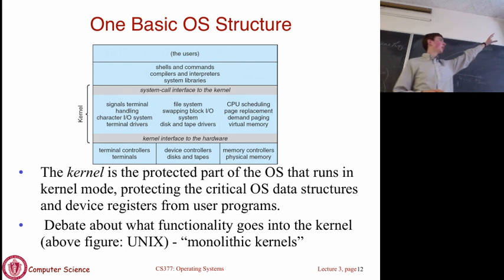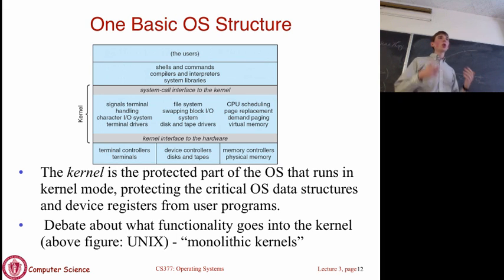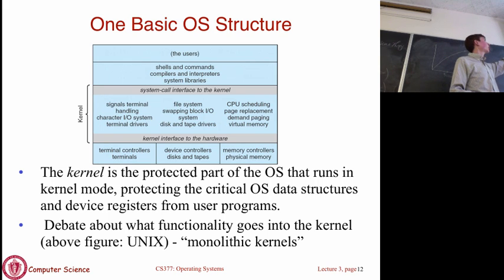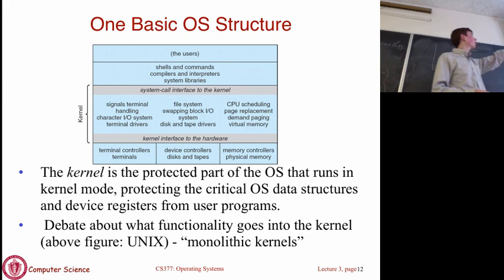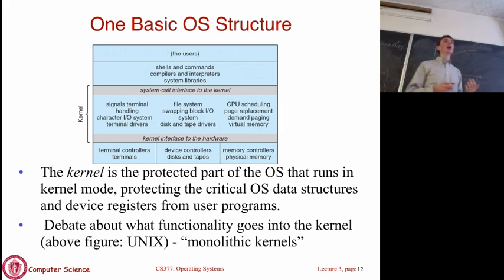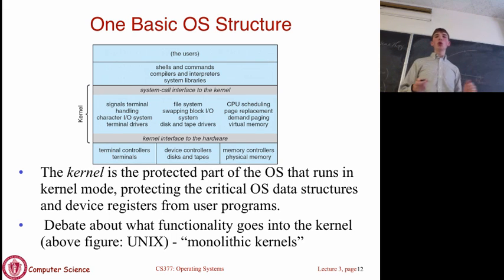Unix is what's known as a monolithic kernel, meaning the kernel is all one unit—everything in the kernel is running as one process. Inside this kernel we have the file system, CPU scheduling, virtual memory, device drivers—all executing as one block. Most operating systems today are considered monolithic kernels, with some caveats we'll get into.